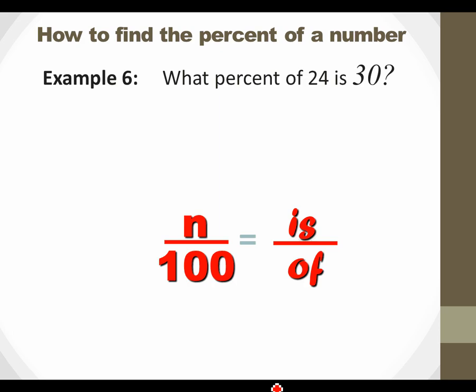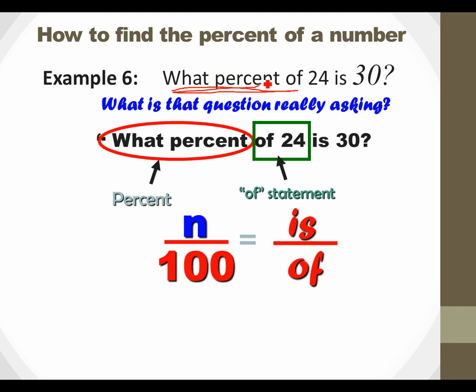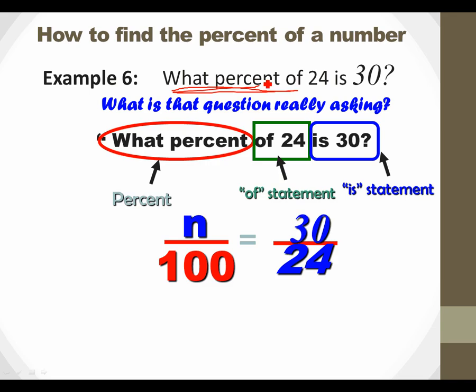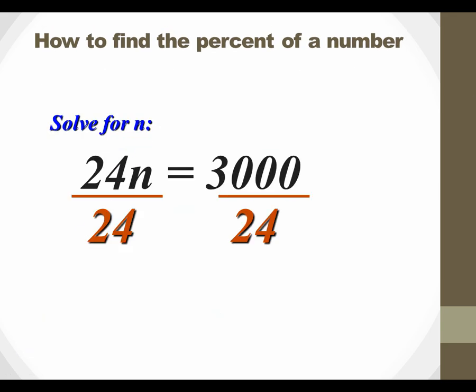Here's an example of one where it's asking you to find a percent. And how do we know that? Because it says what percent. We don't know what the percent is. What percent of 24 is 30? So what percent? We don't know. Let's call it N. Of 24. That's our of statement. Put that in the bottom. Our is is 30. So go ahead and solve it. Just cross multiply. 24 times N is 24N. 100 times 30 is 3,000. And then you're just going to do 3,000 divided by 24. And there you go. You got 125 percent.